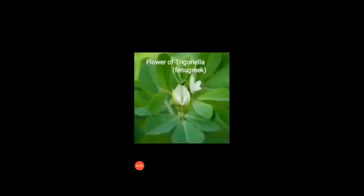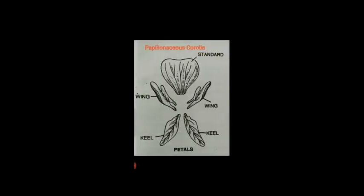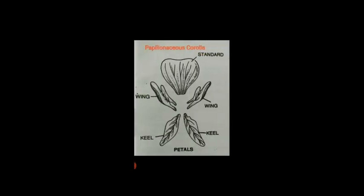This is the flower of trigonella, i.e. fenugreek. This family has a unique papilionaceous corolla, where the corolla possesses one large posterior standard, two lateral wings, and the two innermost and smallest keel.